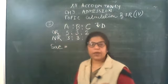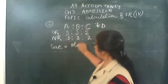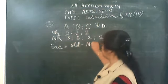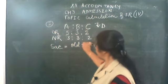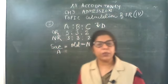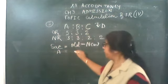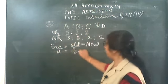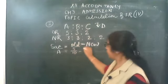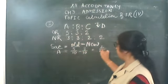Now how to calculate sacrifice — very good. Same formula: old minus new. What is A's old ratio? It is 5/10. And what is A's new ratio? It is 3/10. So A's sacrifice is 5/10 minus 3/10, which equals 2/10.